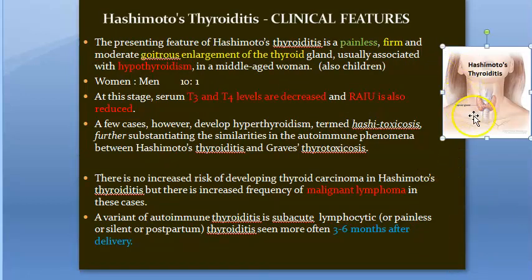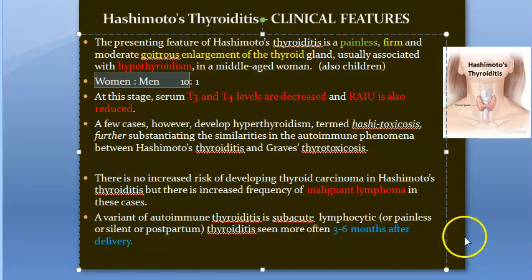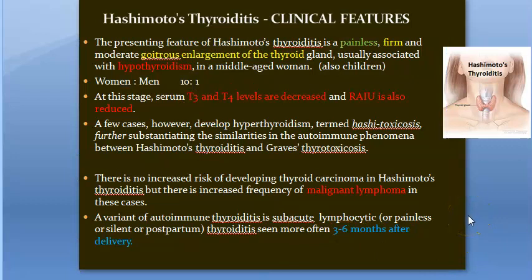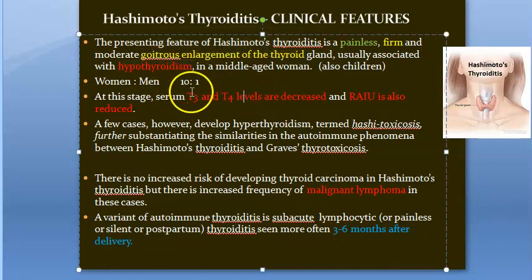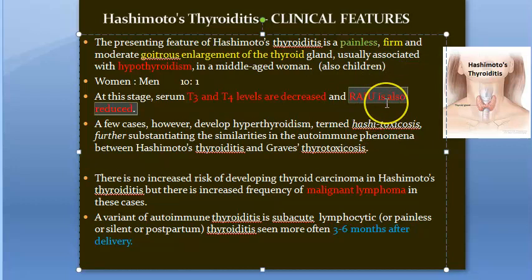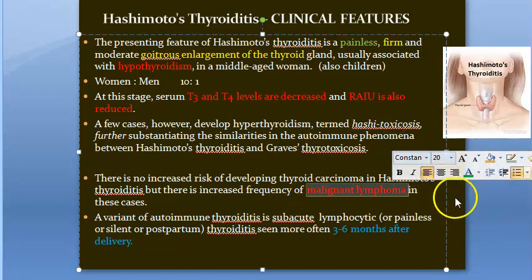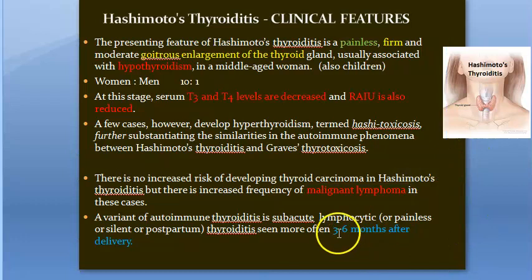Clinically, the person will come to you with a painless firm goitrous enlargement of the thyroid and will be showing symptoms of hypothyroidism most of the time. Women are affected, and women who have delivered children about three to six months ago also present with this issue. The T3 and T4 levels would be less, radioactive iodine uptake will also be less, and this can later on develop into malignant lymphoma.